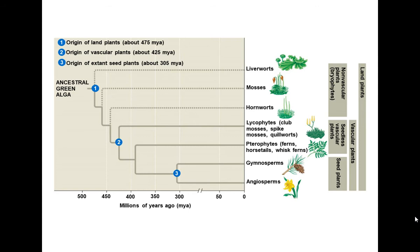We still have the seedless vascular plants: the mosses, the lycophytes, the ferns and pterophytes, and then the non-vascular plants. We'll talk more about seed plants in the next chapter. The liverworts, mosses, and hornworts all make up the land plants.